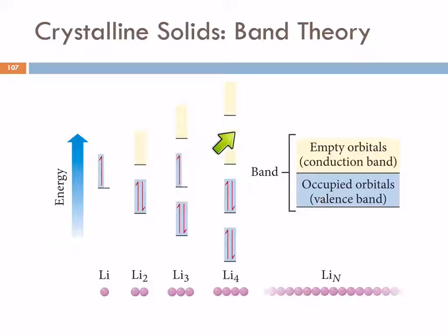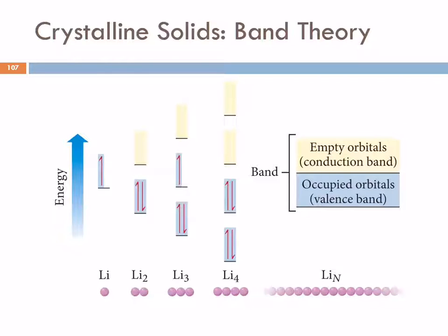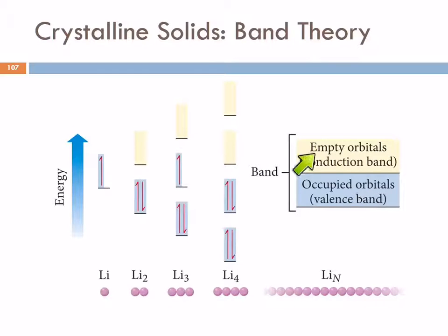The lower-energy orbitals, which are the bonding orbitals, will be full; the anti-bonding will be empty. As we combine more and more and delocalize over the entire structure, the difference in energy between the anti-bonding and the bonding becomes lower and lower. The empty orbitals are called the conduction band; the occupied orbitals are called the valence band. This is where the valence electrons are. The conduction band is the anti-bonding orbitals that are empty.